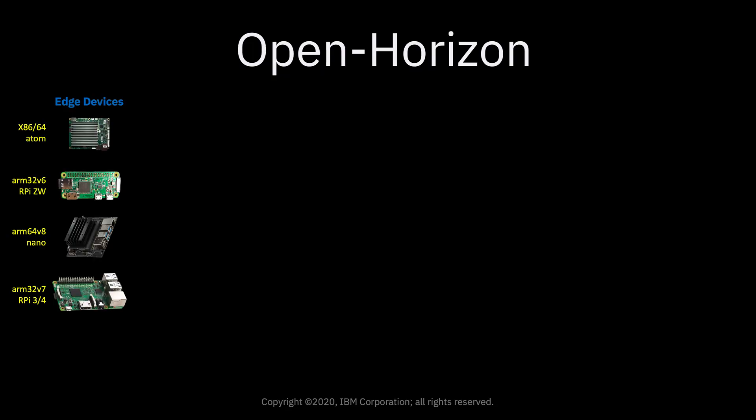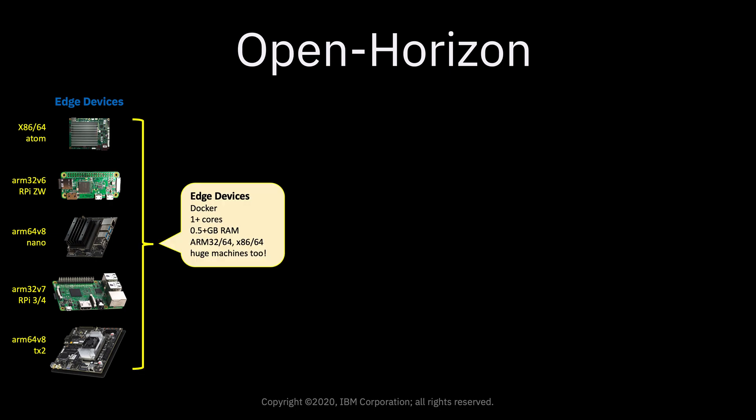You know about the edge devices — lots of little machines — but they can be huge machines too. One of the machines I regularly use has 96 cores and 200 gigabytes of RAM, and Open Horizon is great for managing the containers on that machine as well. Open Horizon now also supports Kubernetes clusters, so one of the edge nodes can be an entire cluster managed by Open Horizon.